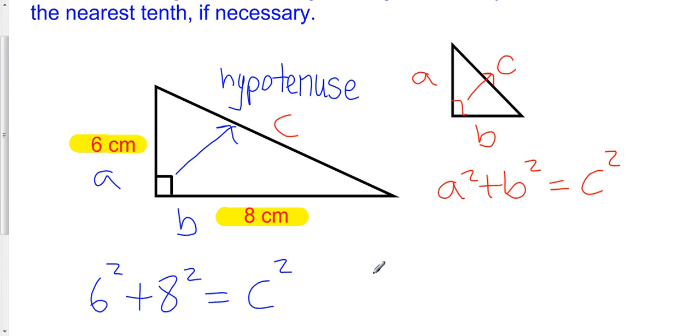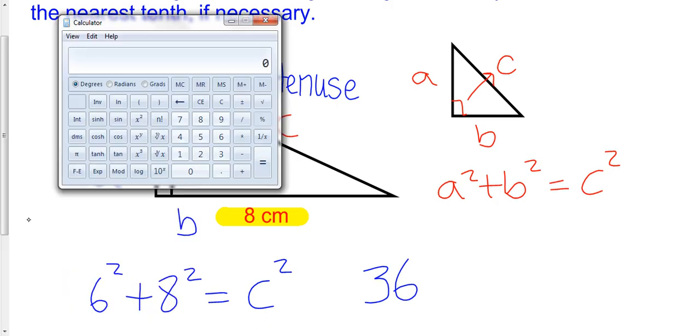So what is 6 squared? Well, 6 squared is 36. And if you didn't know that, you can always pull out your scientific calculator. Let's pull out a calculator here, and you can just do 6. Scientific calculators, most of them have a little x squared button. So when you square the number that you've inputted, there you go, that's 6 squared, that's 36.